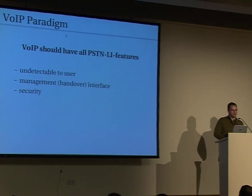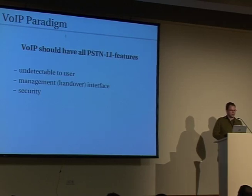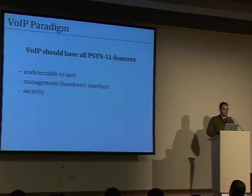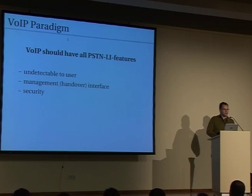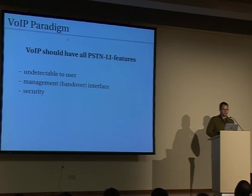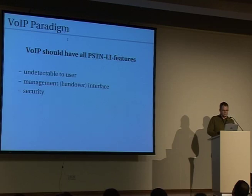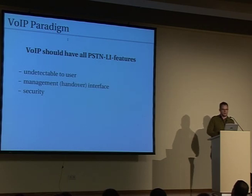VoIP should have all the PSTN law of interception features. It should be undetectable to the user — if you're getting intercepted, the law enforcement agency likes to see information, but if you notice you're being intercepted you might order pizza or something and won't talk like you did before. The handover interface and management — who's actually allowed to order you to do something — should be the same, since the government knows how to deal with that. And regarding security: nobody was really able to attack PSTN hardware since there's no IP-based access to PSTN gateways, and it was hard to get hold of PSTN hardware. But with VoIP it's easy — there's an operating system running on your soft switch and you can just attack the underlying OS.